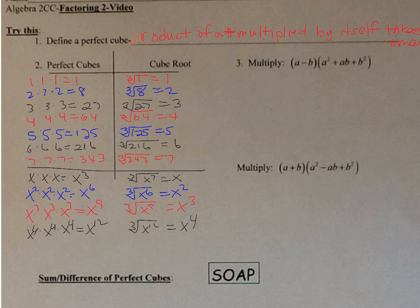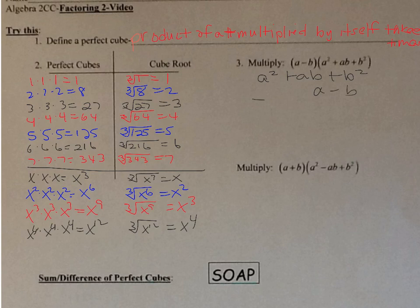Let's talk about multiplying. We have the binomial (a−b) times (a²+ab+b²), set up vertically. Starting with −b: negative b times b² is −b³, negative b times ab is −ab², and negative b times a² is −a²b.